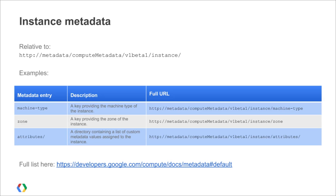The metadata server also provides information about the instance. All instance metadata entries are relative to the path http://metadata/computeMetadata/v1beta1/instance/. Examples include machine-type, which is a key providing the machine type of the instance; zone, which is a key providing the zone of the instance; and attributes/, a directory containing a list of custom metadata values assigned to the instance. To see a full list of instance metadata entries, see the documentation.